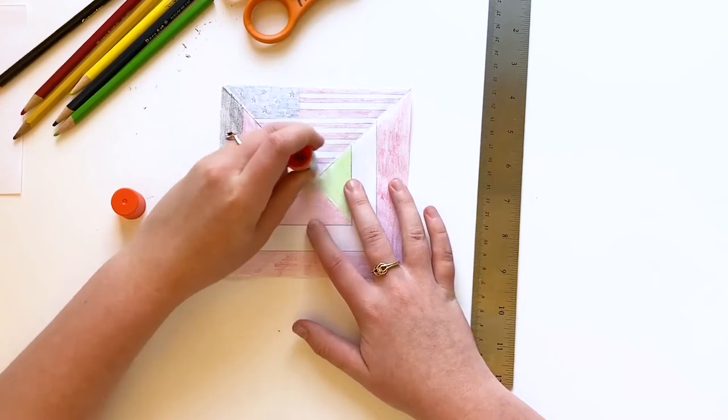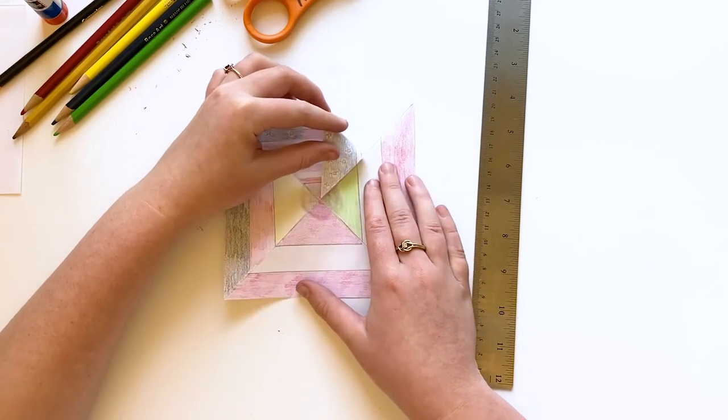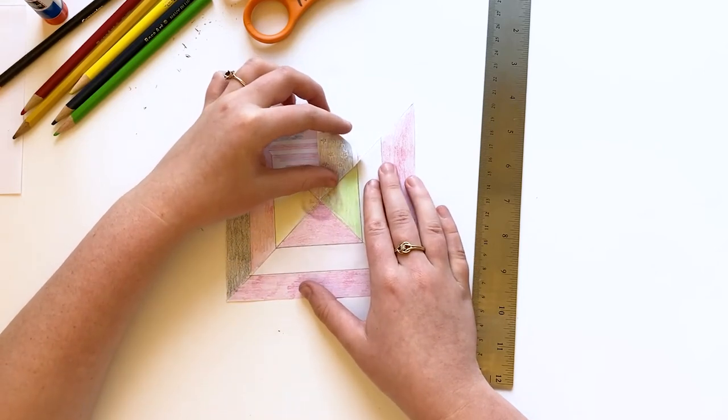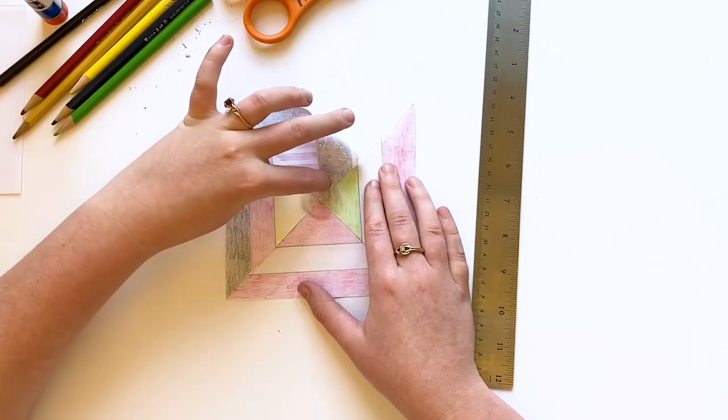Put glue in the center of only one side and fold over one corner of each triangle, making sure that the same corner is glued down for each flag, creating a pinwheel shape.